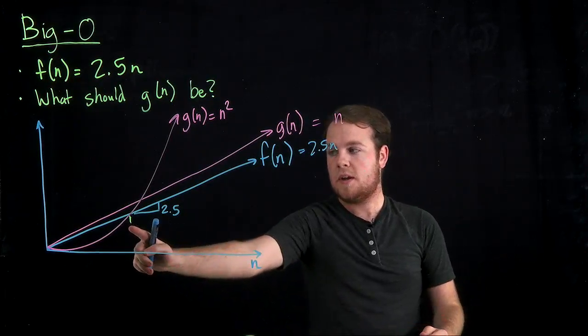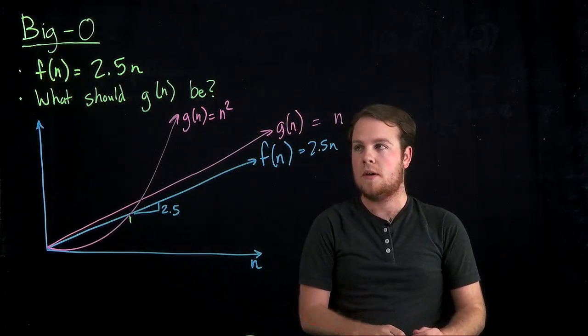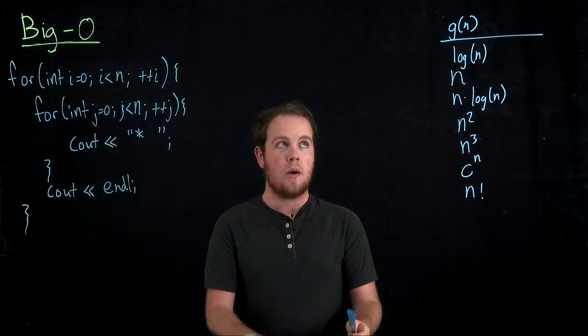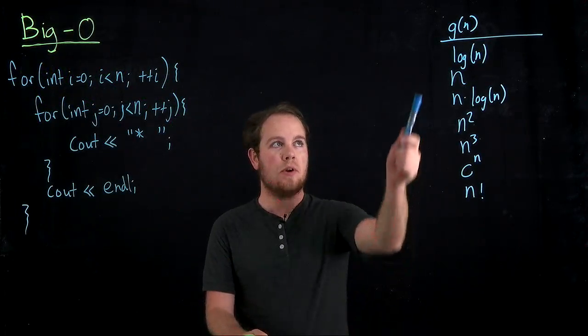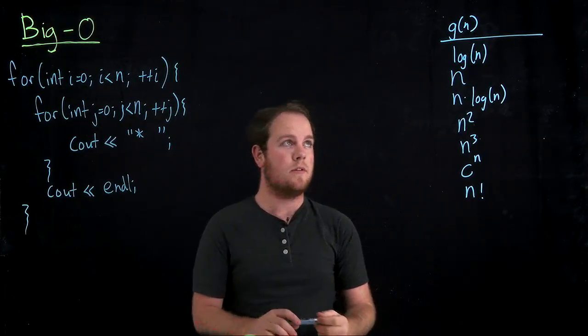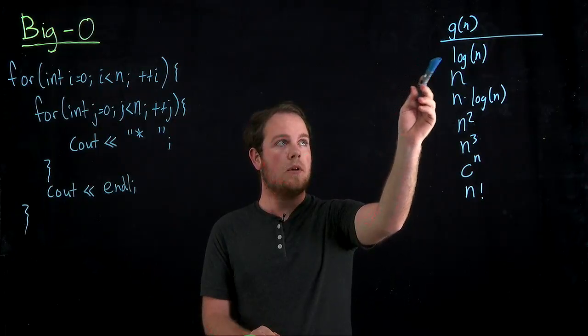And after this point right here, some point, you don't need to know it, n squared will grow larger than n. So commonly, you're going to memorize this list of common g of n, right? So we have log of n.